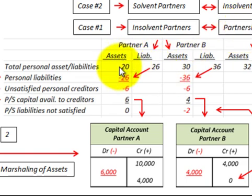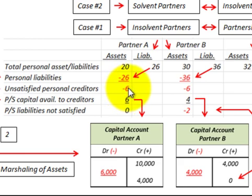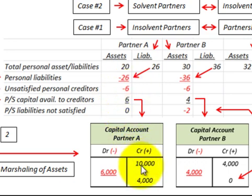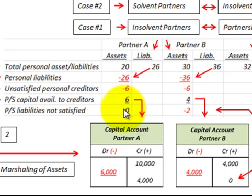To review: we took the assets less the personal liabilities to identify unsatisfied personal creditors — that occurred because liabilities were greater than assets. We then looked to the capital account to determine how much the unsatisfied personal creditors could receive. For Partner A, there was $10,000 in the capital account and only $6,000 needed, so all personal creditors were satisfied and the partnership had no unsatisfied liabilities.